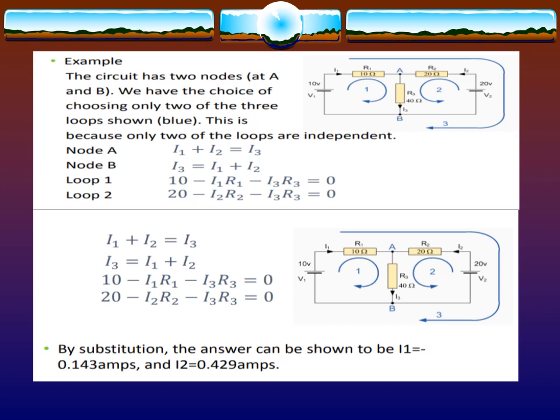The circuit has two nodes at A and B. We have the choice of choosing only two of the three loops shown, because only two of the loops are independent. At node A, I1 plus I2 equals I3. At node B, I3 equals I1 plus I2.